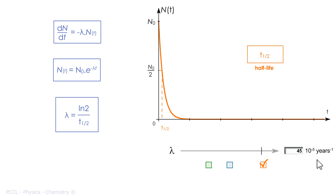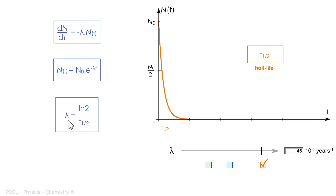I haven't mentioned the lambda unit yet. It can be seconds to the minus one, that is to say per second. Since we have seconds and ln(2) is the number 0.693, then lambda is in per second. But we can very well express lambda in per day, per week, or per year. What is important is to be consistent: if lambda is expressed in per year, then the time must also be expressed in years.